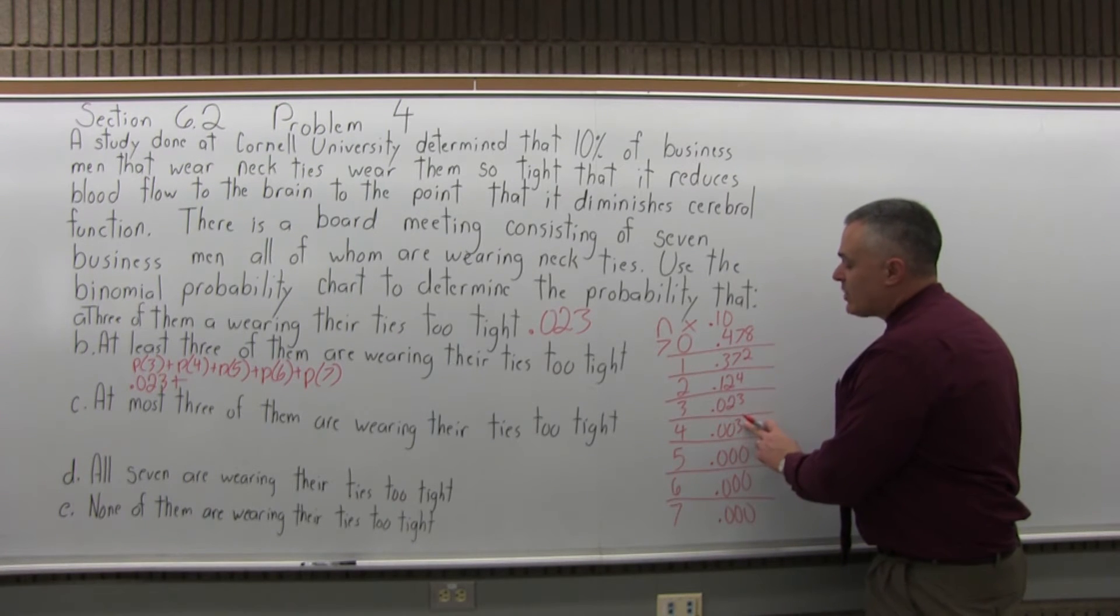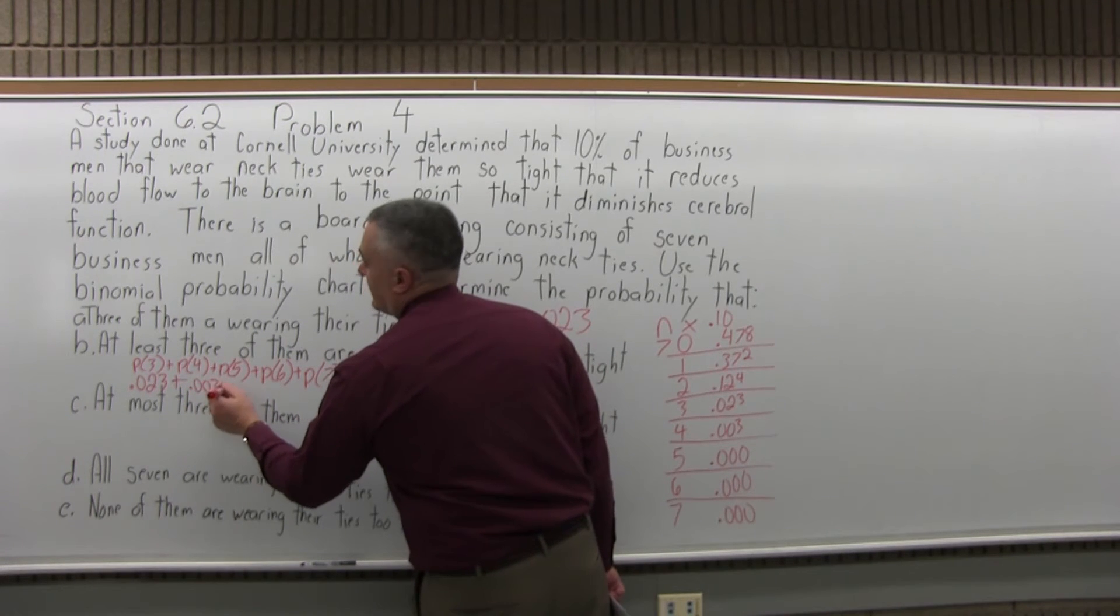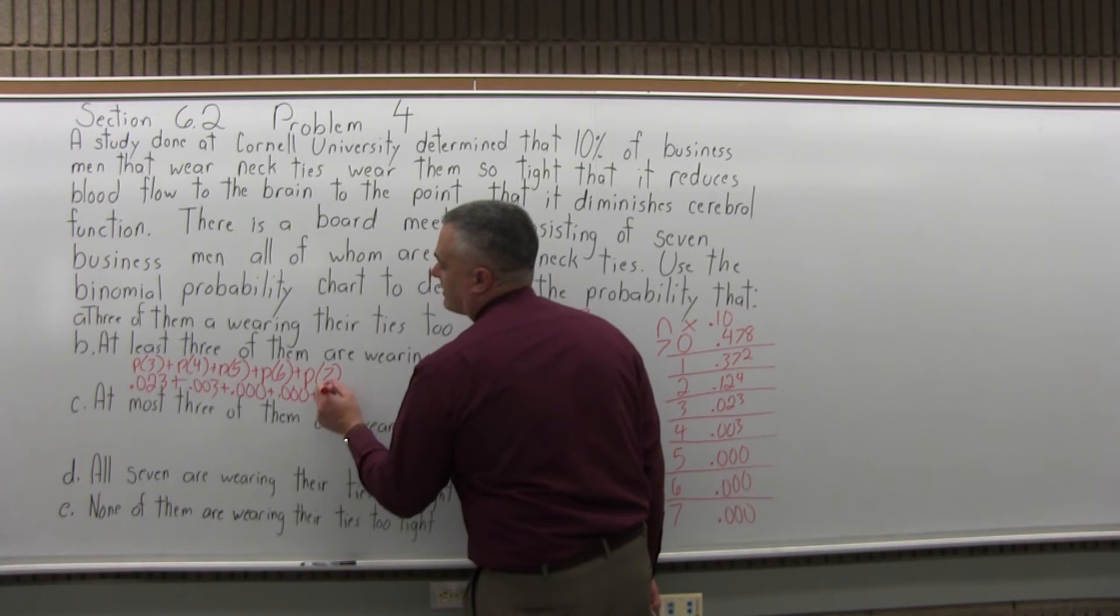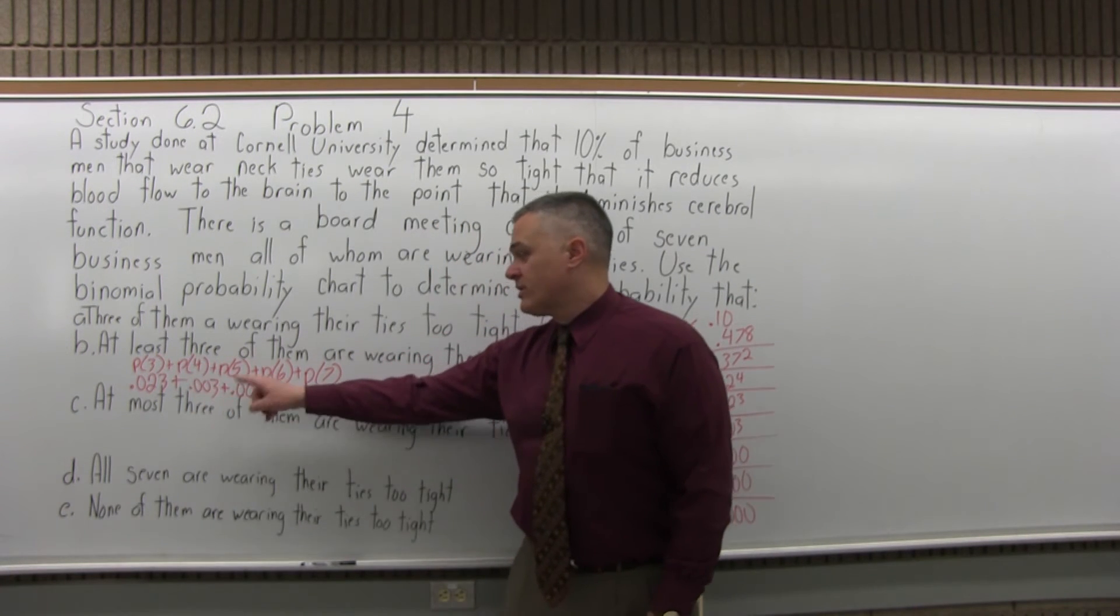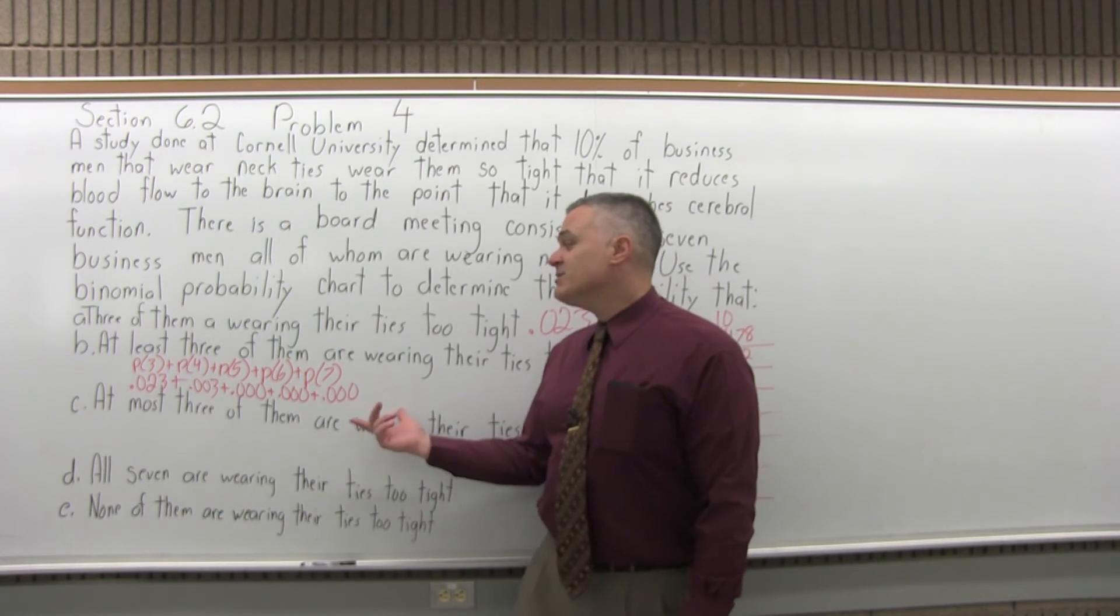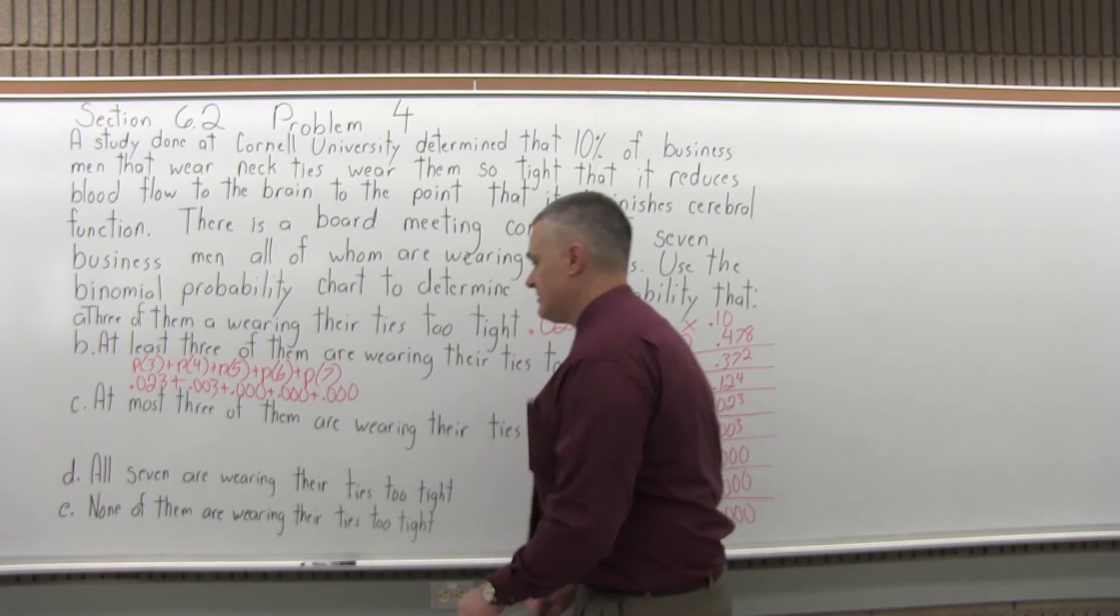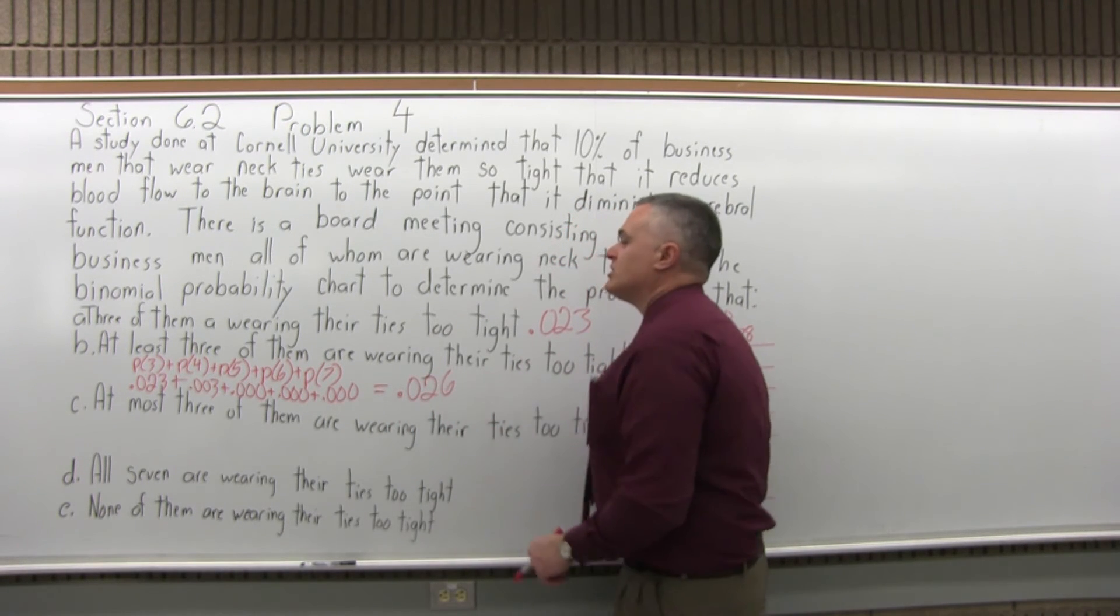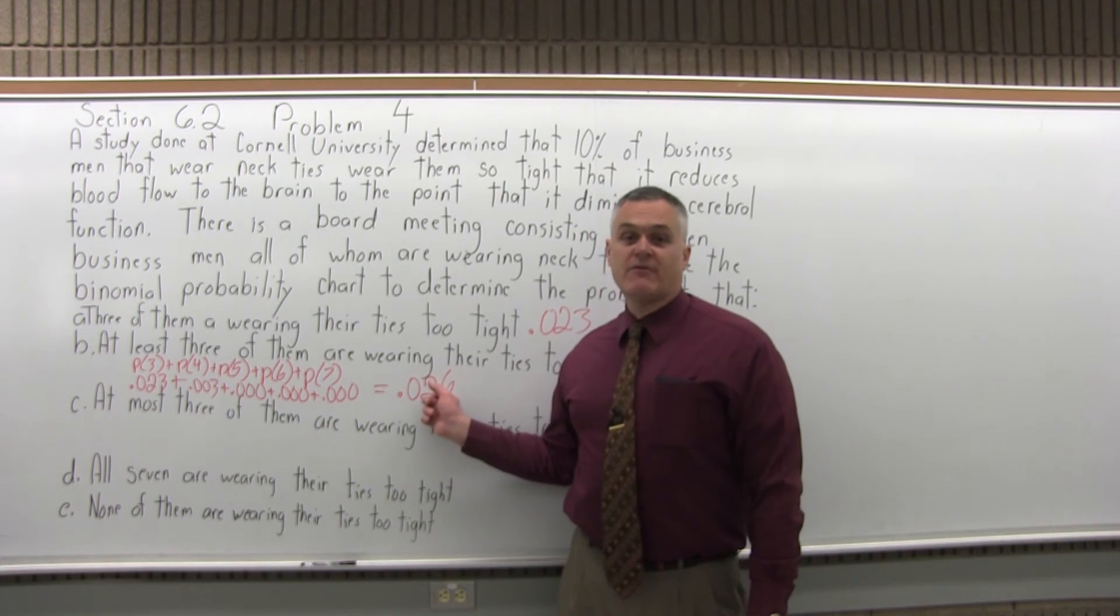For five, six, and seven within reasonable round off it's .000. So I can fill those in. Now you're going to add .023, plus .003, plus .000, plus .000, plus .000 again. Since most of them are zeros, I can actually add this even without a calculator to be .026. The probability that at least three of the businessmen have their ties on too tight is slightly more than a 2.5% probability.